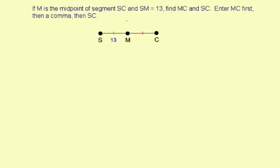If M is the midpoint of segment SC and the measure of SM is 13, find MC and SC. Enter the measure of MC first, then a comma, then the measure of SC.